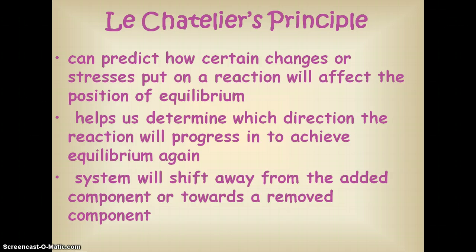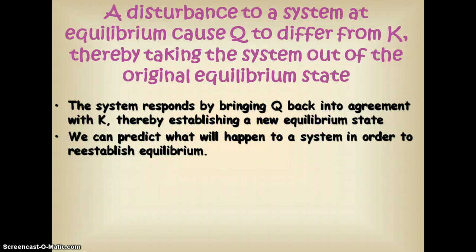According to Le Chatelier's Principle, a system will always shift away from an added component or towards a removed component. Any time we have a disturbance placed on a system that's in equilibrium, this causes Q to come into play. We're at K because we're at equilibrium — K is equal to Q. We throw a disturbance in there and that causes us to have a Q that is different from our K, so we have to figure out how to get the system back to equilibrium by bringing Q back into agreement with K.